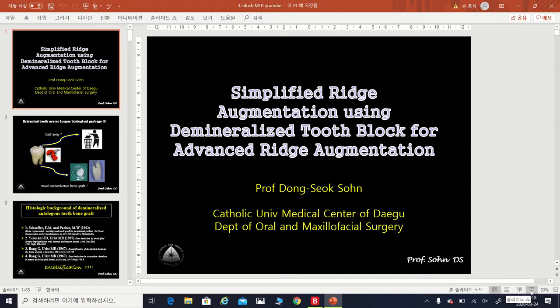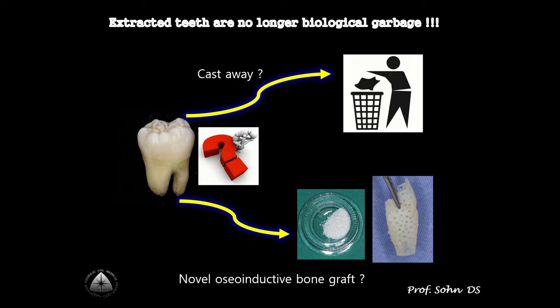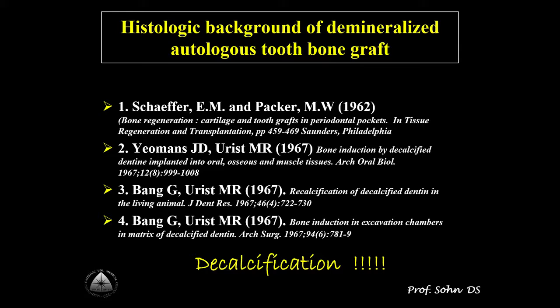Hello colleagues. The subject I would like to present today is simplified ridge augmentation using demineralized my tooth bone block for advanced ridge augmentation. After extraction of hopeless teeth, do you want to cast away patient's extracted teeth in the trash, or would you like to make normal osteoinductive bone graft?